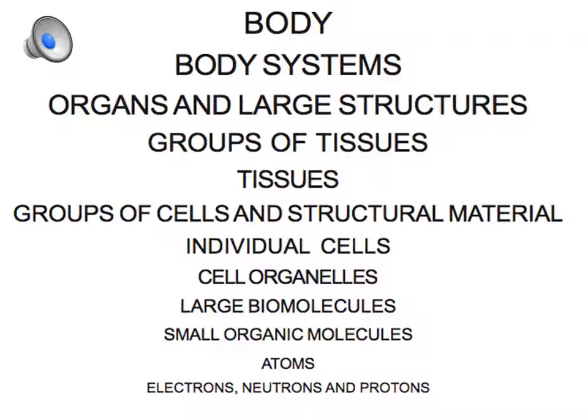So that's another level of organization, the tissues. So we've gone from the whole environment, to society, to the body, to body systems, to organs and larger structures, to groups of tissues, down to tissues. And we've mentioned that the tissues themselves are composed of groups of cells with associated extracellular material.